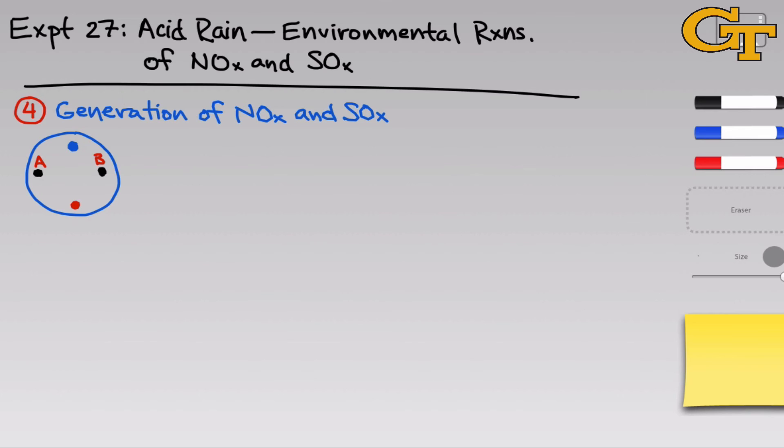In the final part of the experiment, we're going to generate both NOx and SOx together and observe what happens when both gases are present inside the same environmental chamber. So the petri dish this time is going to have four drops. I've drawn them here as blue, red, and two black droplets.